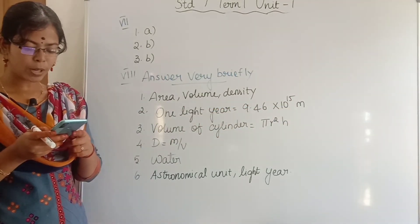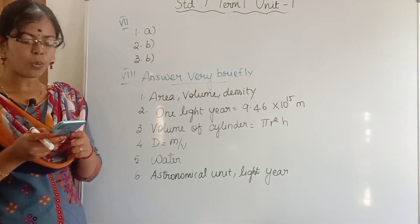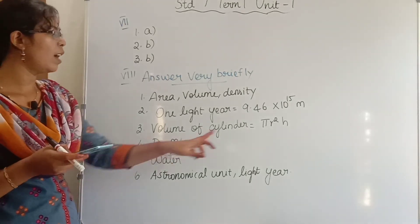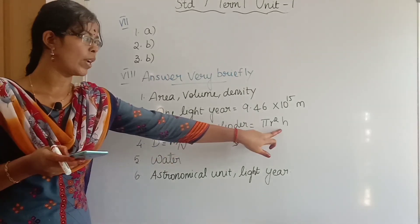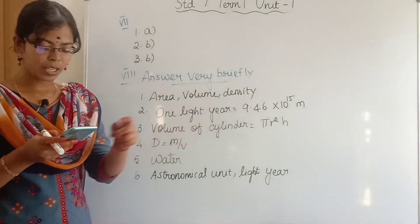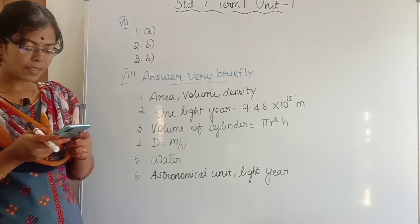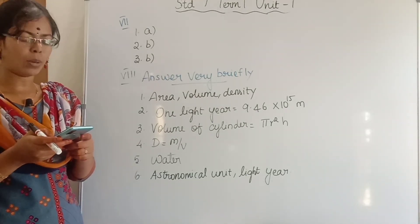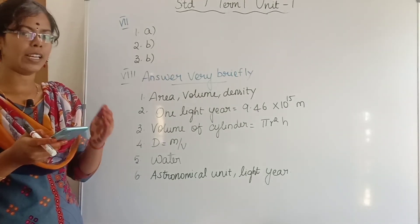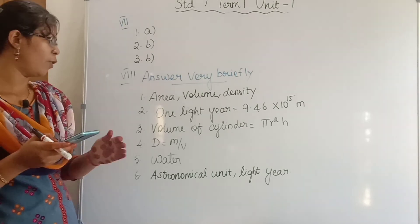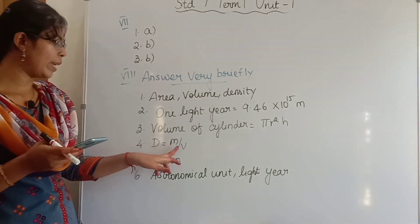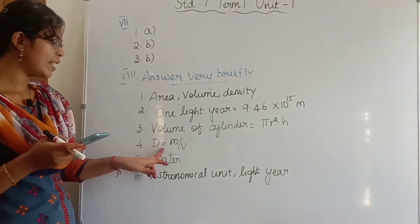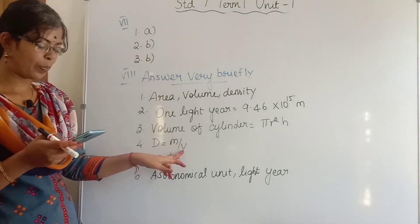Third question: write down the formula used to find the volume of a cylinder. Volume of a cylinder = πr²h. Fourth question: give the formula to find the density of an object. D = M/V, that is, density is equal to mass per volume.